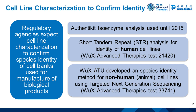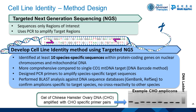Targeted next-generation sequencing sequences only regions of interest. In contrast to whole-genome sequencing, which creates a large amount of data that is time-consuming to analyze, sequencing only targeted loci generates greater coverage of regions of interest and reduces the cost and time needed for data analysis. Targeted NGS uses PCR to amplify regions of interest. To develop our cell line identity method, for each cell line species, we identified at least 10 species-specific sequences within protein coding genes located on nuclear chromosomes and mitochondrial DNA.